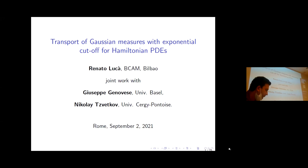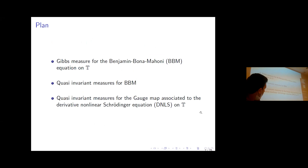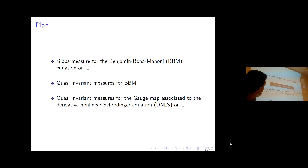I will essentially try to complement the talk of Nicolai. He introduced the concepts of invariant Gibbs measure, quasi-invariant measure, and I will explain what you can do for two particular models: one is the Benjamin-Bona-Mahony equation, and the other is the gauge map associated to the derivative NLS.